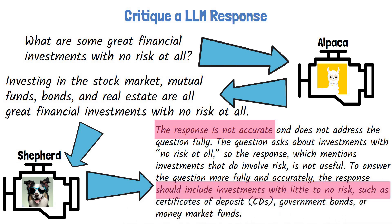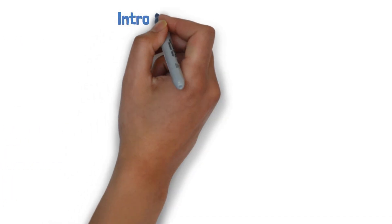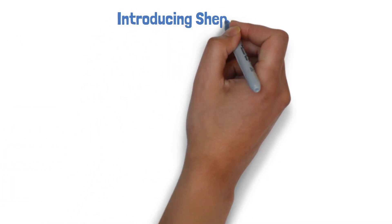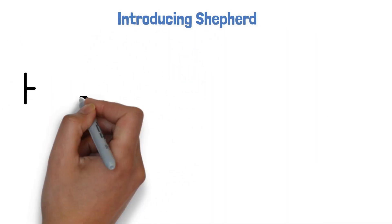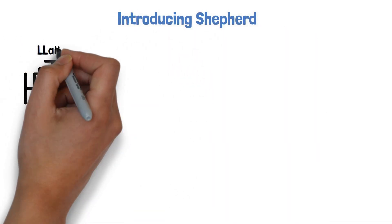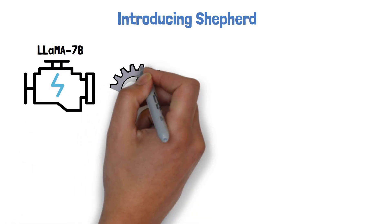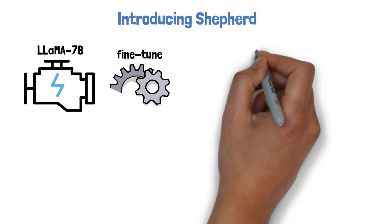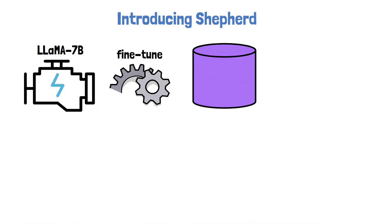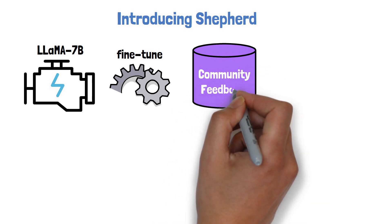So let's understand how the SHEPHERD model was created. To train SHEPHERD, the researchers start with the LLAMA 7B base model and fine-tune it over two distinct datasets. One is Community Feedback Data.